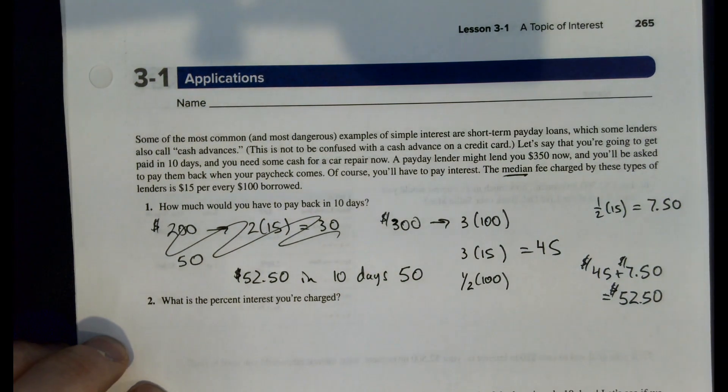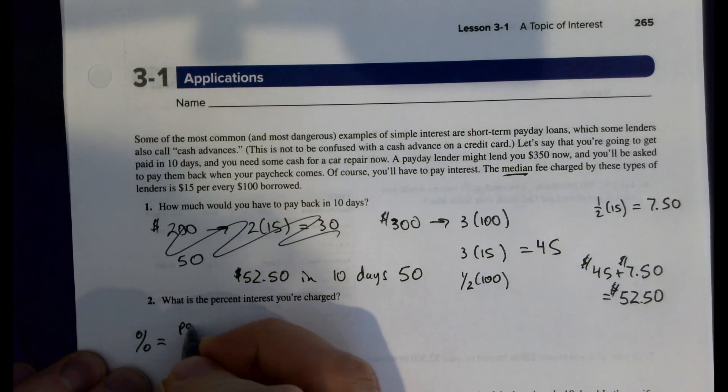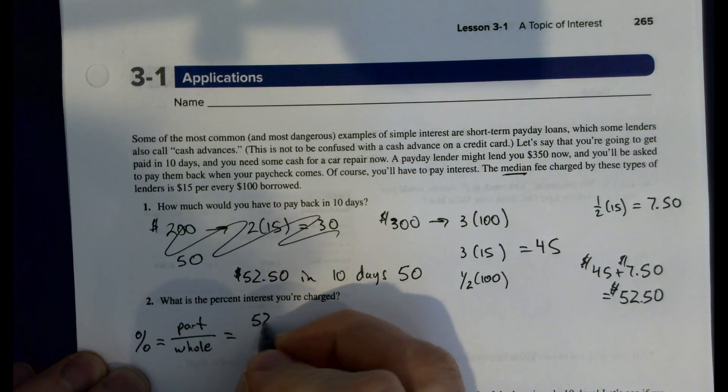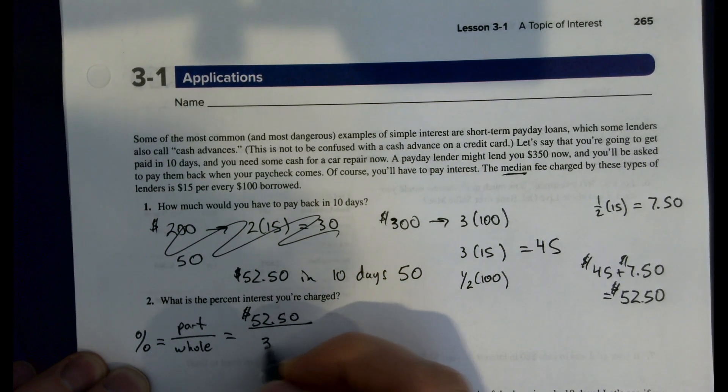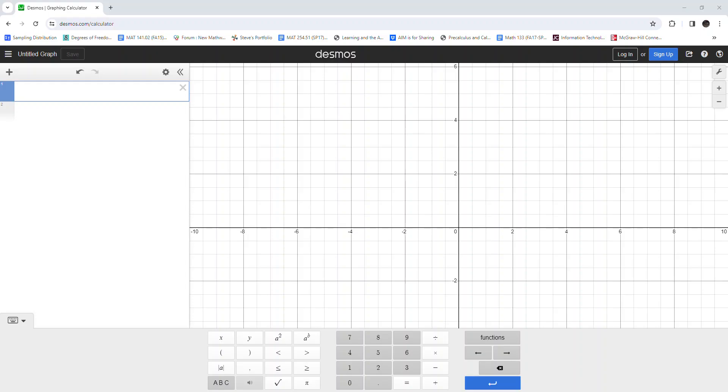So what percent interest is that? Well, remember, as we said in a prior video, percent is the part divided by the whole. So our part here is the $52.50, and the whole that we're being charged on is the $350. We're going to do $52.50 divided by $350, that's 0.15 or 15% if I multiply by 100.